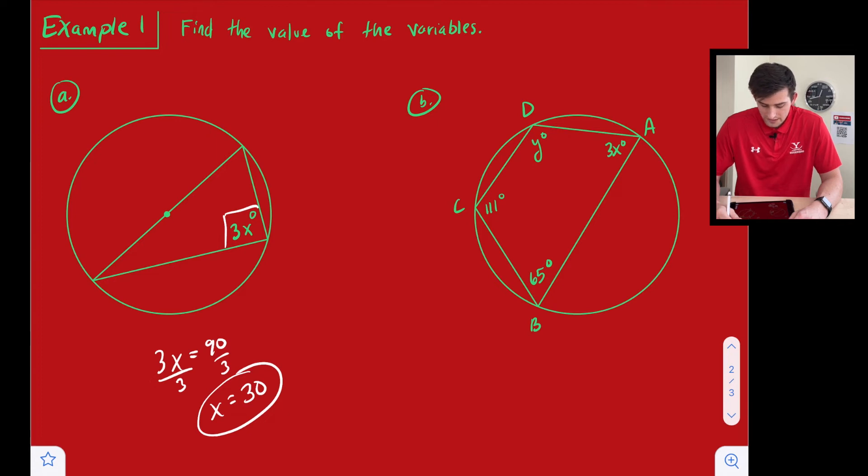All right, and for example 1B, we have a quadrilateral. So we know that these angles that are opposite of one another need to be supplementary, which means they add up to 180 degrees. So let's start with angles A and C.